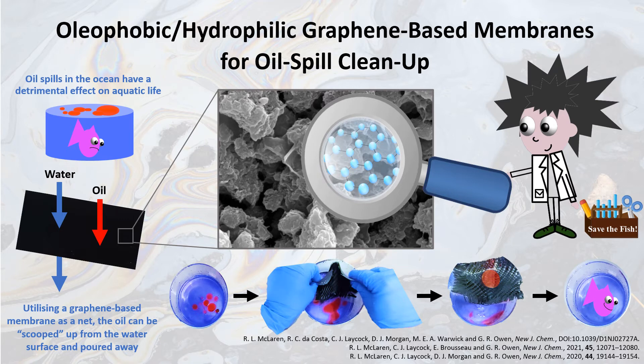This membrane is very black in colour, which originates from the dark graphene material it comprises. These membranes are considered oleophobic, meaning that they repel oil, while simultaneously displaying hydrophilic behaviour, meaning that they allow water through. Electron microscopy images reveal that the membrane consists of an interesting porous structure consisting of a network of holes and channels, which allow easy passage of water. Meanwhile, the membrane contains a unique polymer which provides the oil-repelling oleophobic behaviour.